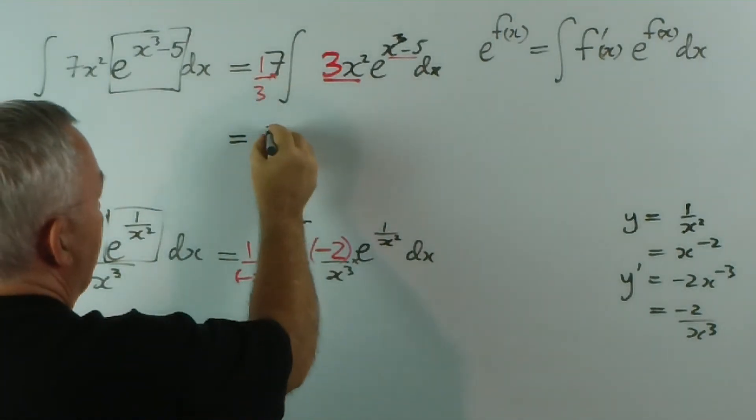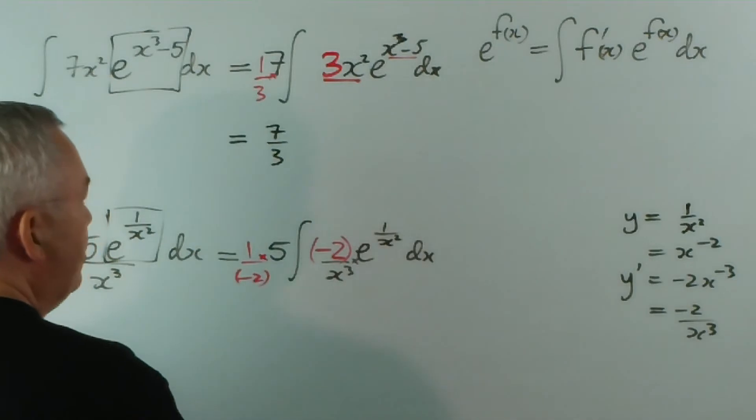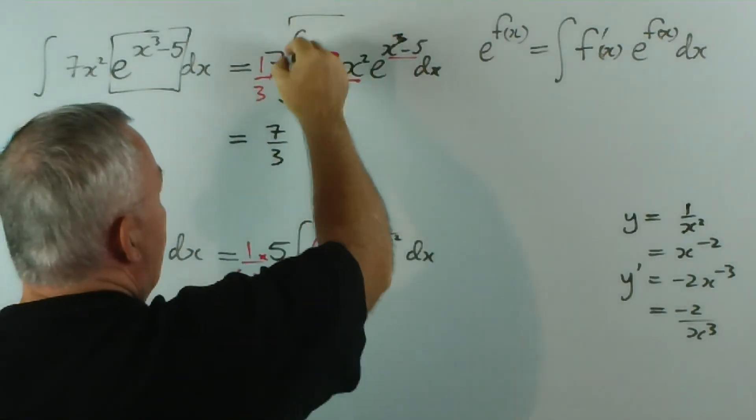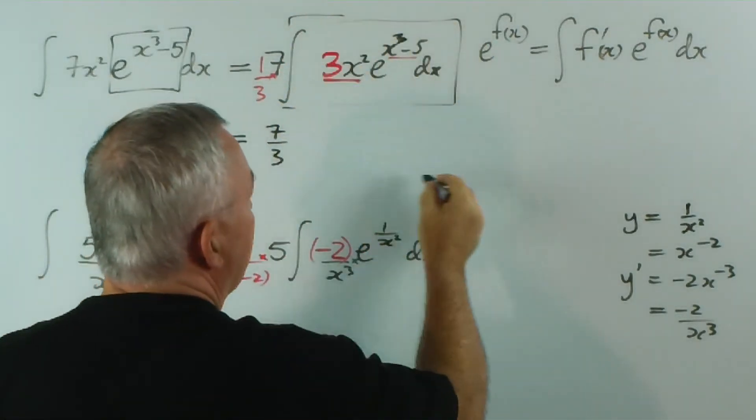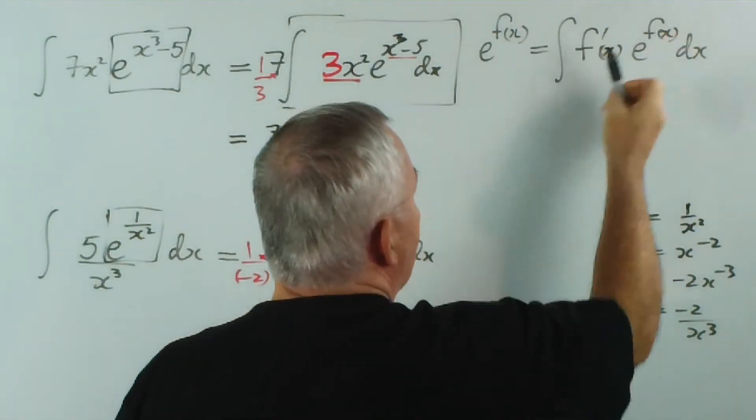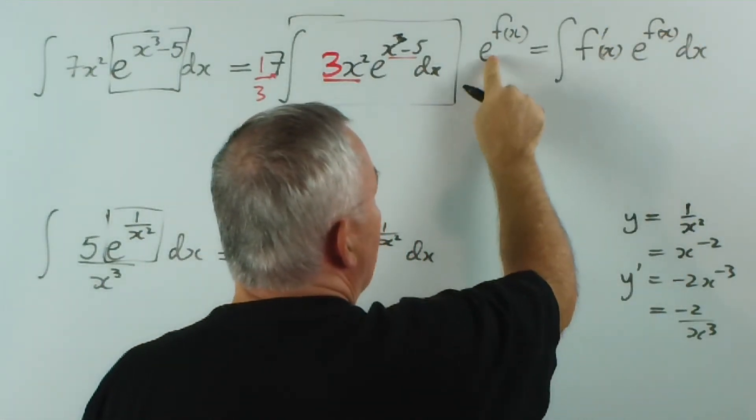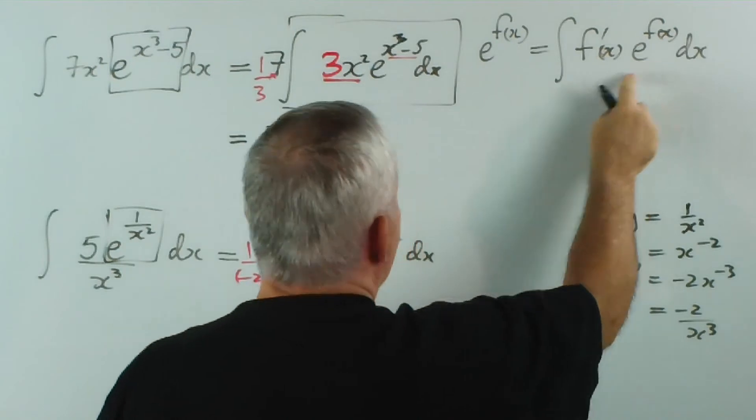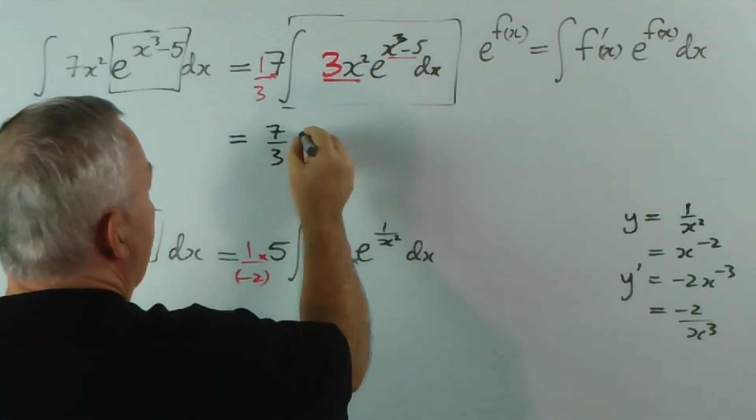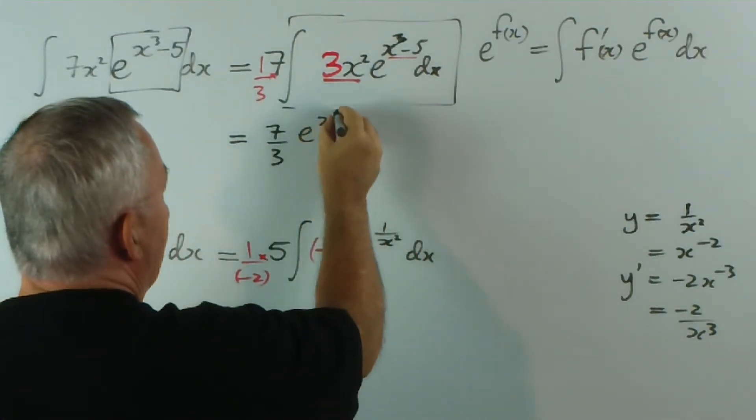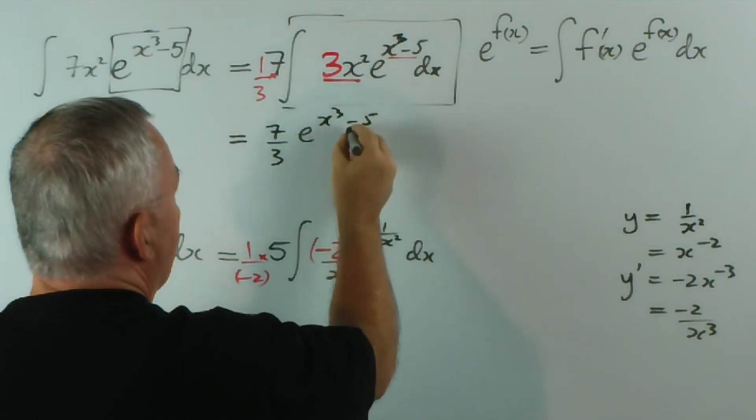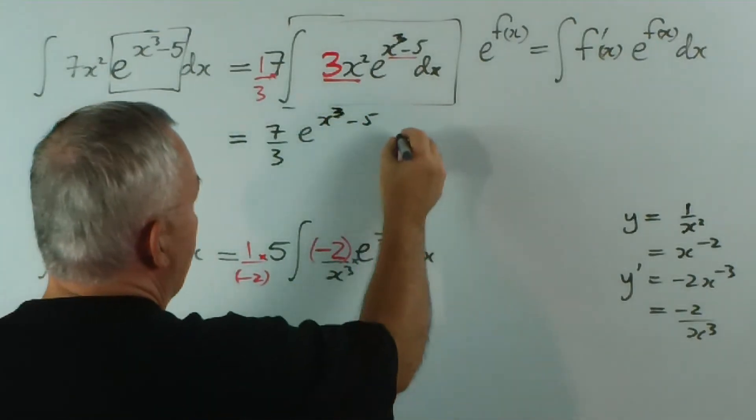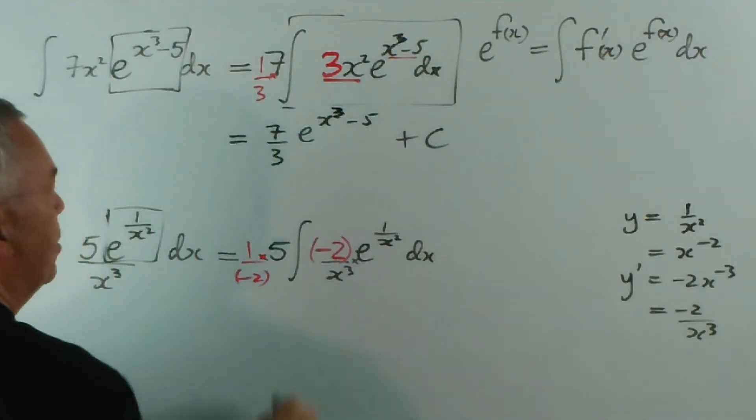A third of seven is seven on three, and this complete integral matching this pattern simply gives us e to the fx, exactly what this is. So we just copy this out, e to the x cubed minus five. Seem to be having trouble with threes today. Plus the constant, of course, because it's an indefinite integral.